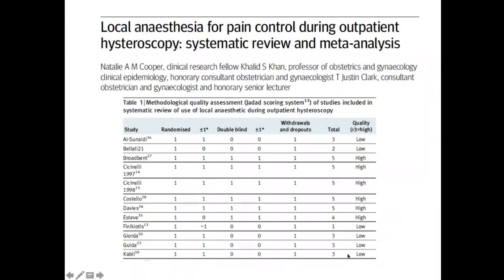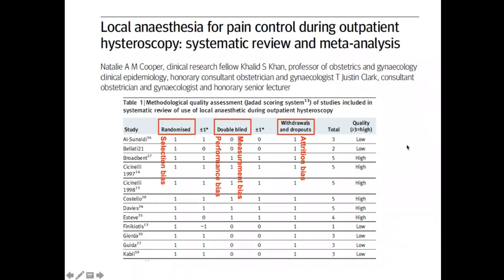A student asks a question: their systematic review only includes preclinical studies — specifically in vitro studies — and they want to know if all those biases are also applicable to preclinical studies, given that most preclinical studies do not even mention randomization, blinding, and so on.